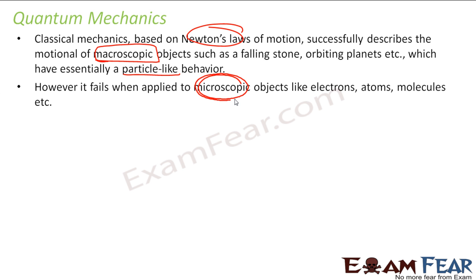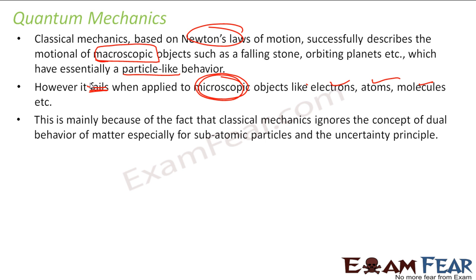But when it comes to microscopic objects like electron, atom, nucleus, it fails. The classical physics fails. This is because the classical physics ignores the dual theory. It thinks that the particle is only particle in nature.